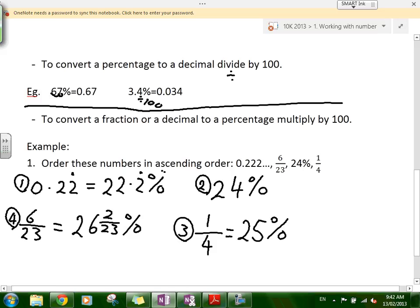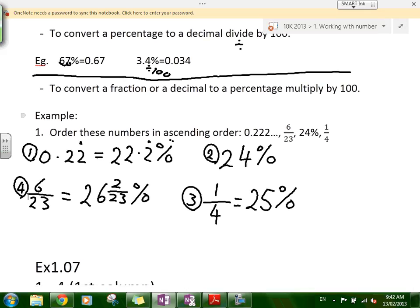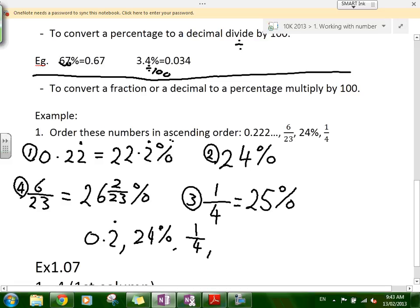And of course, you write it in each order as well. For this sort of question, it's generally good to write it in the original form that you were given. So I'll write, in ascending order: 0.2 repeater, 24%, one quarter, and six over 23. That's the ascending order.